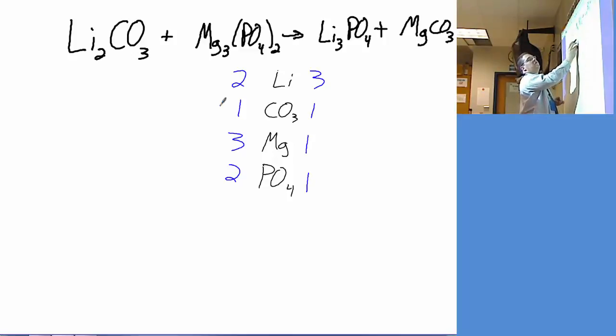Let's start with lithiums - two on the left, three on the right. Think even-odd combination. There's no whole number we can put in front of Li2CO3 that's going to give us three lithiums. So think least common multiple. Least common multiple of two and three is six. So if I want to end up with six lithiums on each side, this needs to be a three and this needs to be a two. Let's update our inventory.